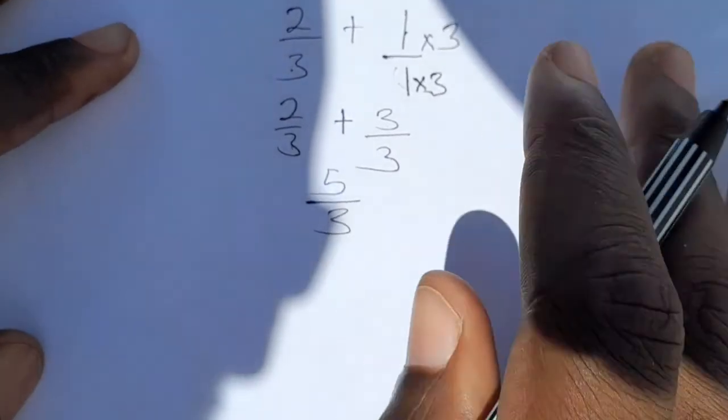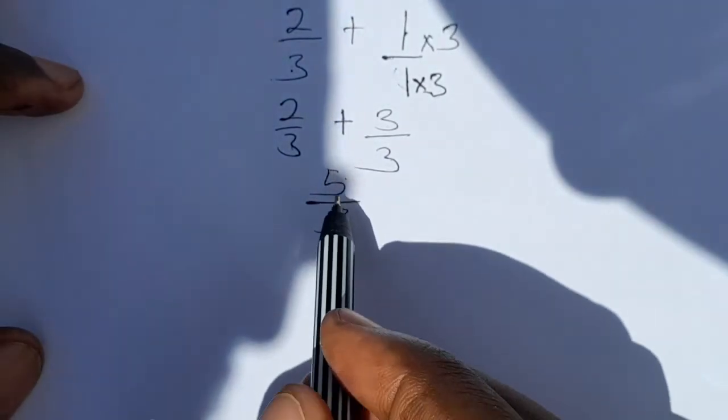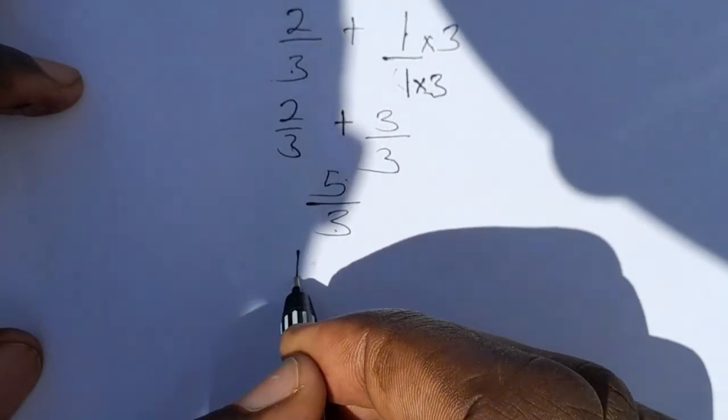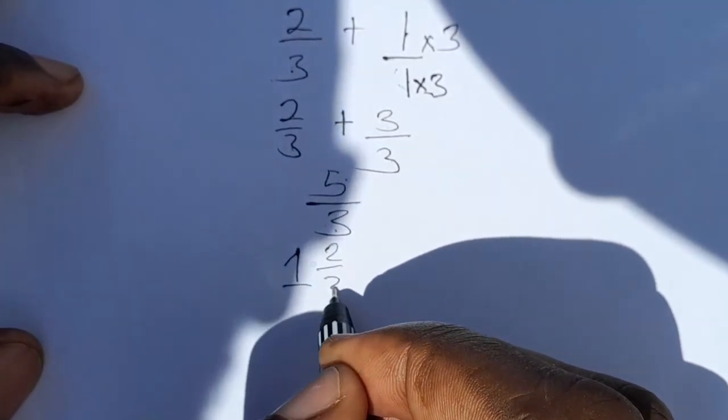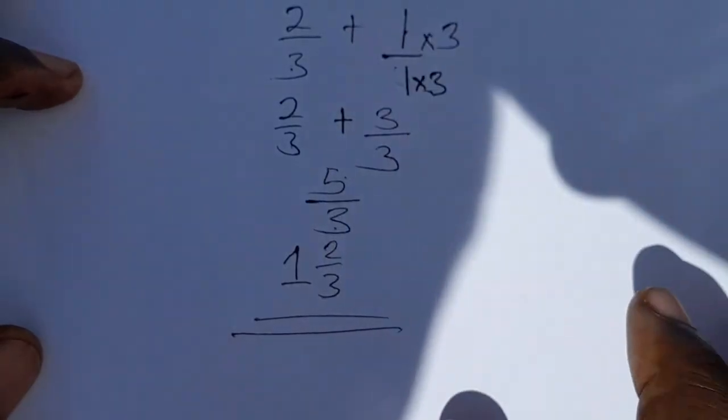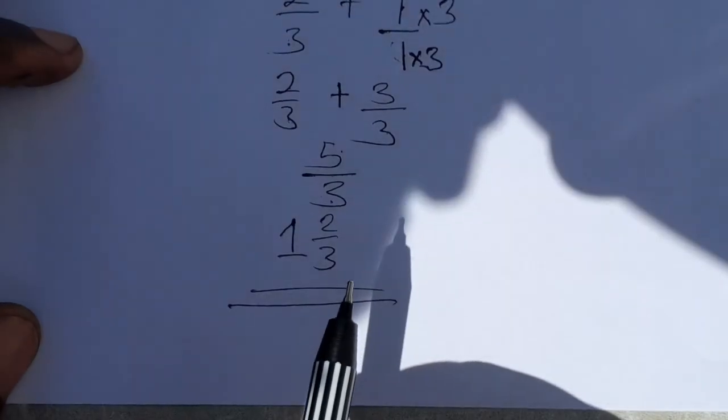Then 5 over 3. Then 3 can go into 5 one time remainder 2 over 3. So this is the answer.